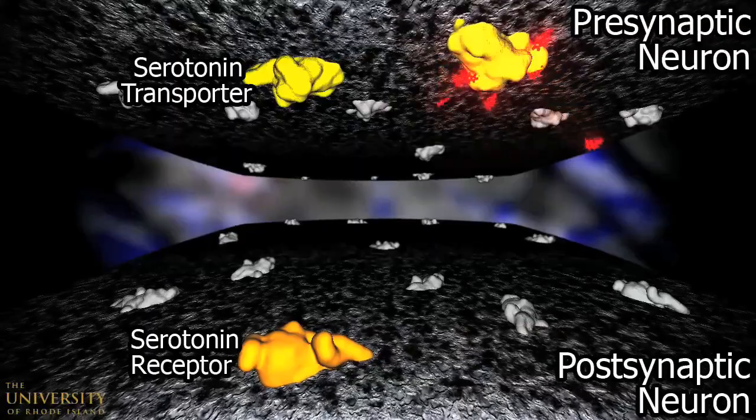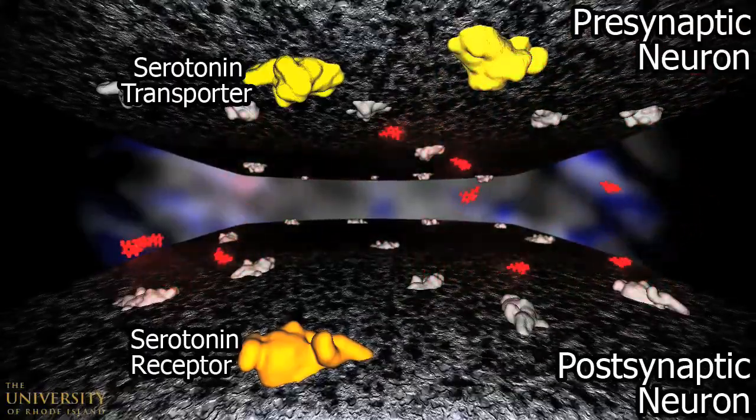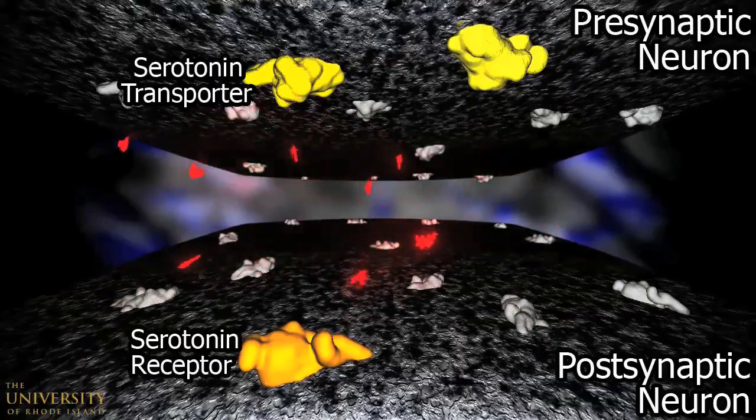In its uninhibited mechanism, serotonin moves circuitously from the presynaptic vesicle to the postsynaptic receptor protein where it temporarily binds.